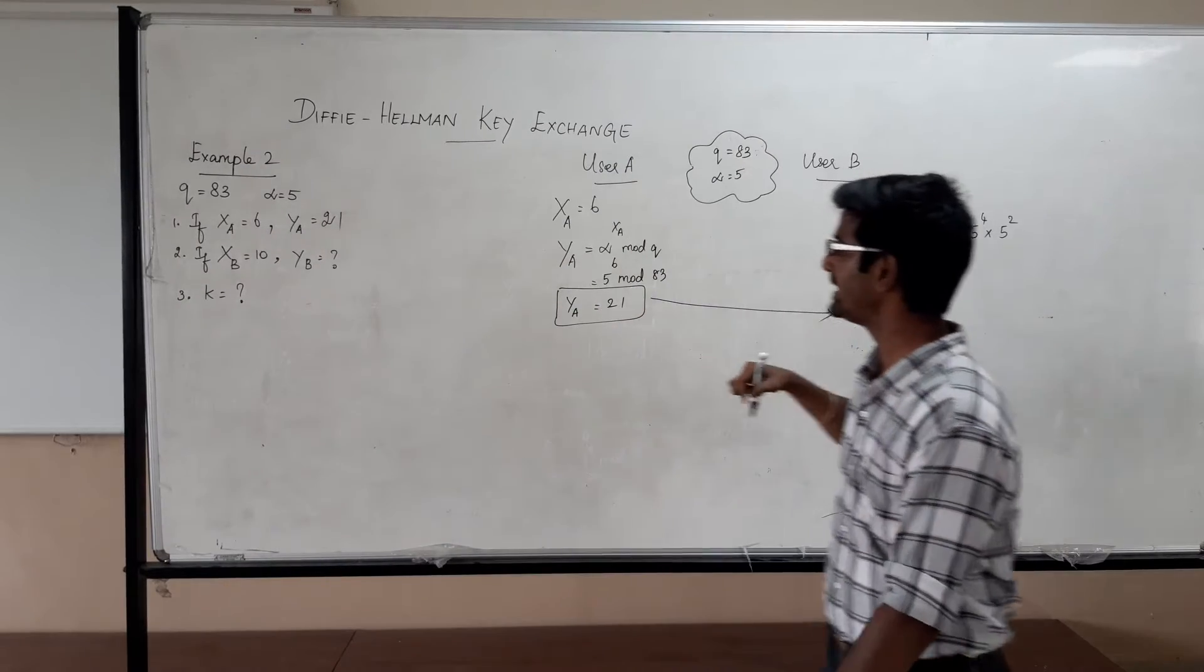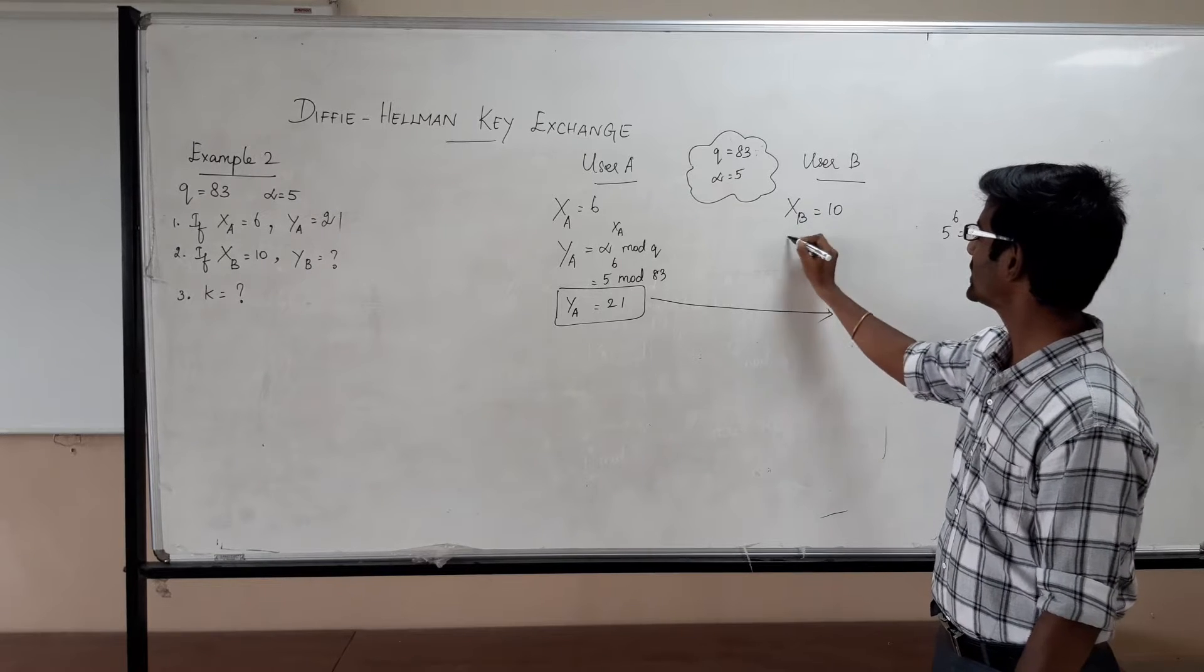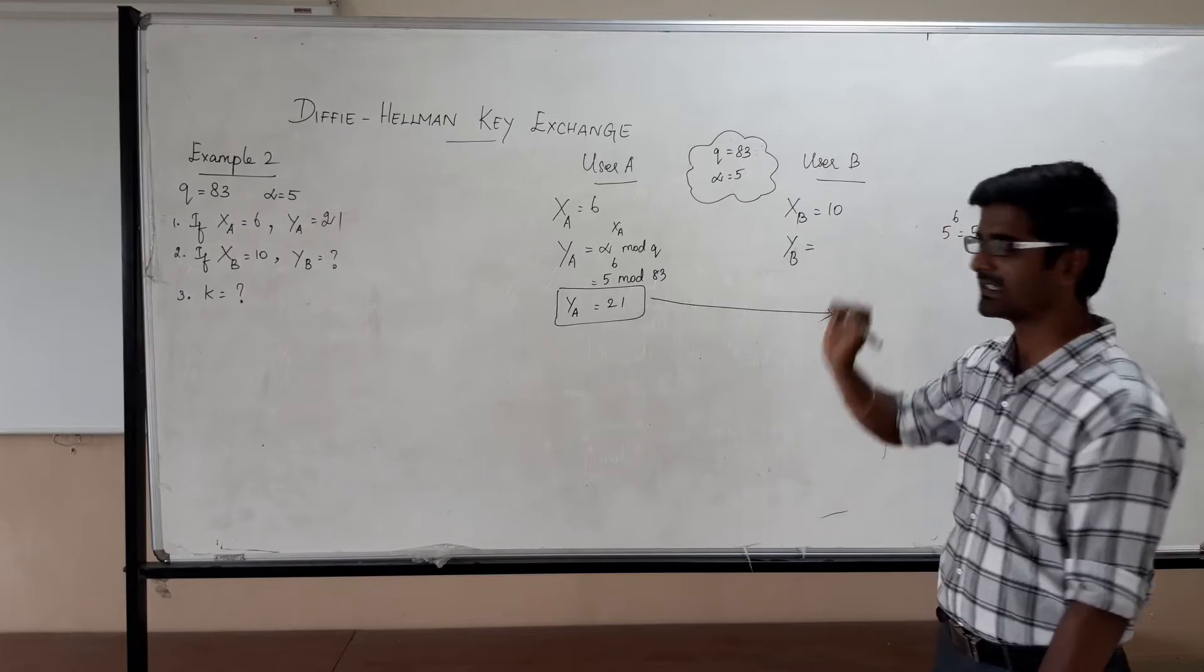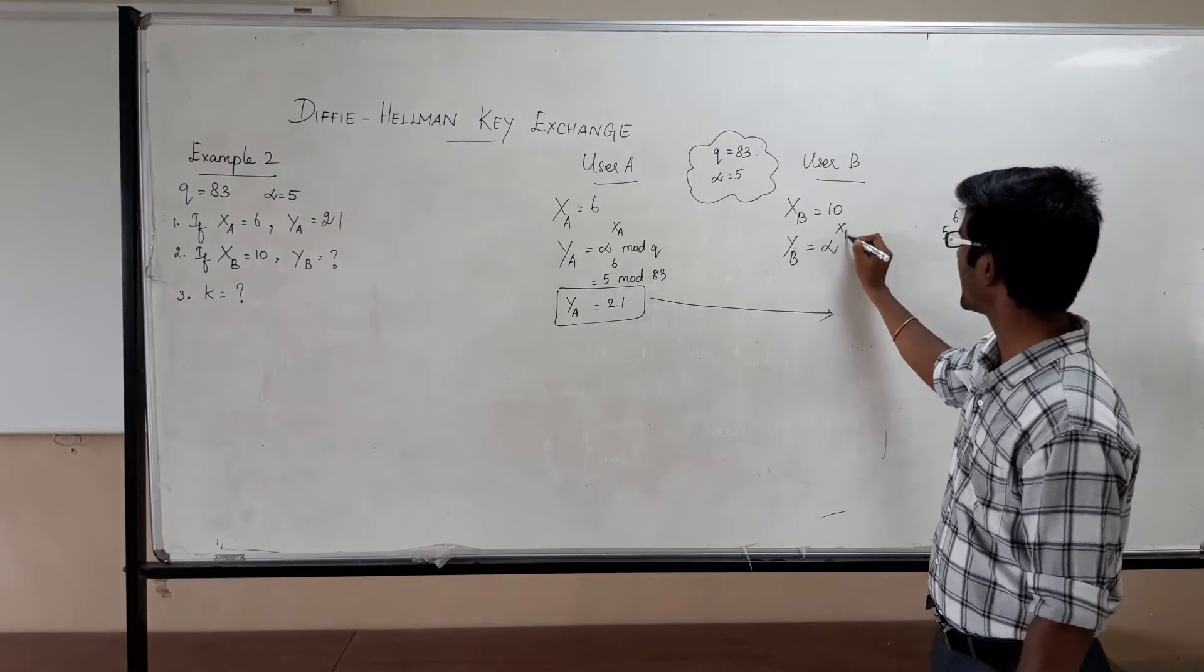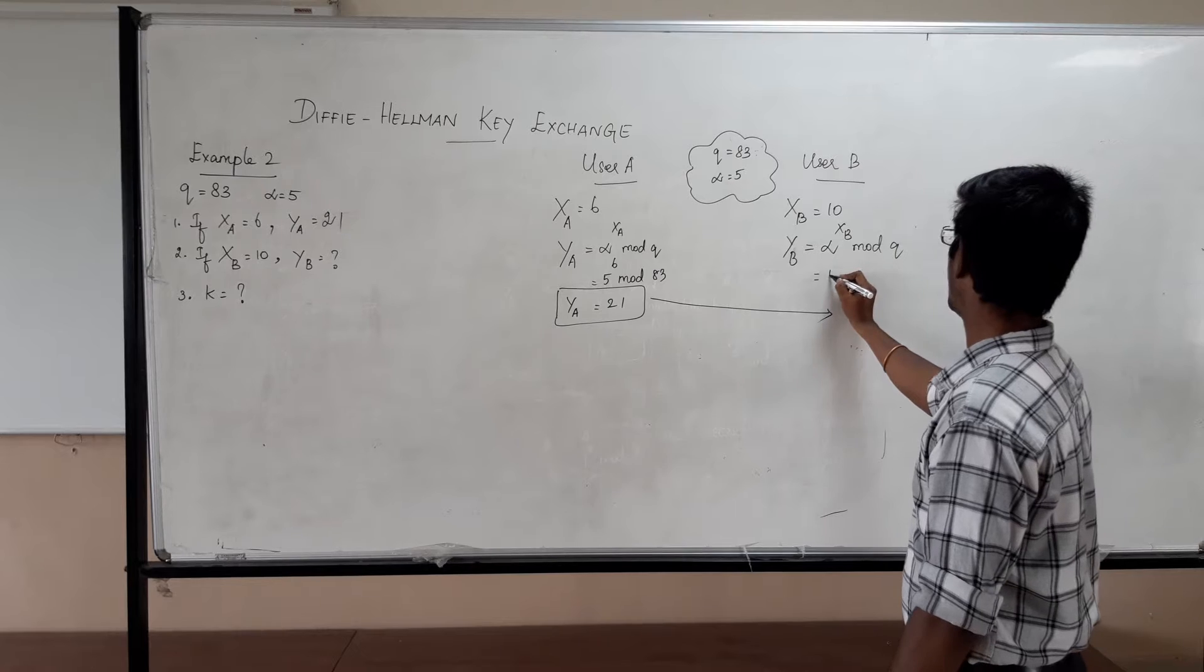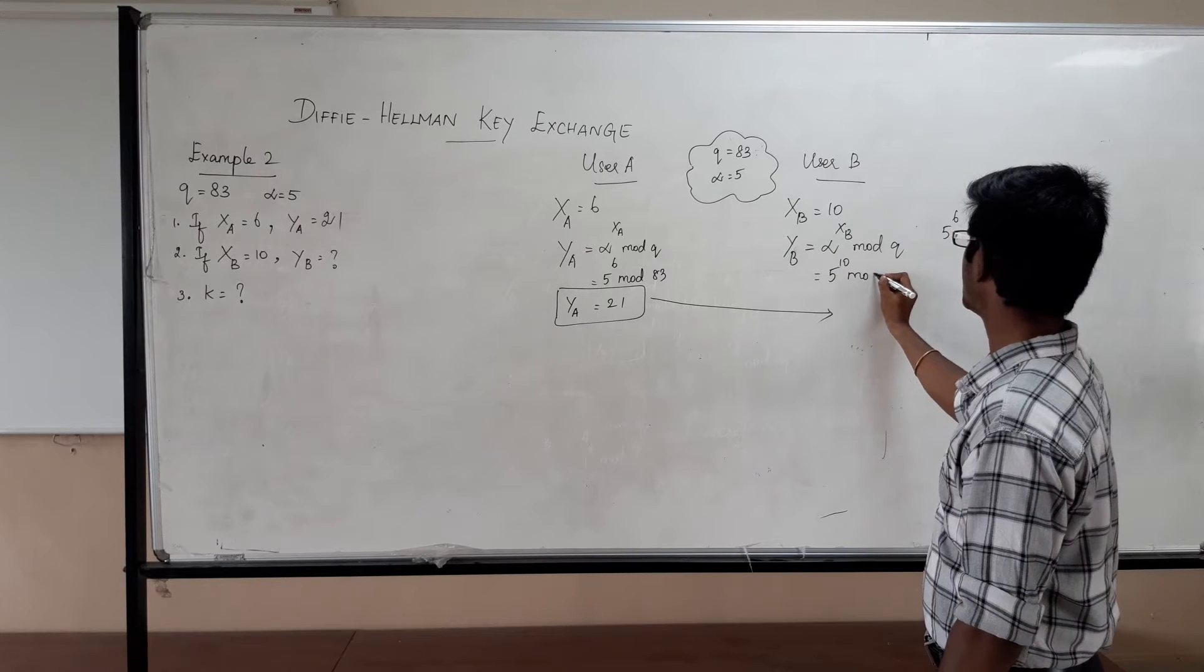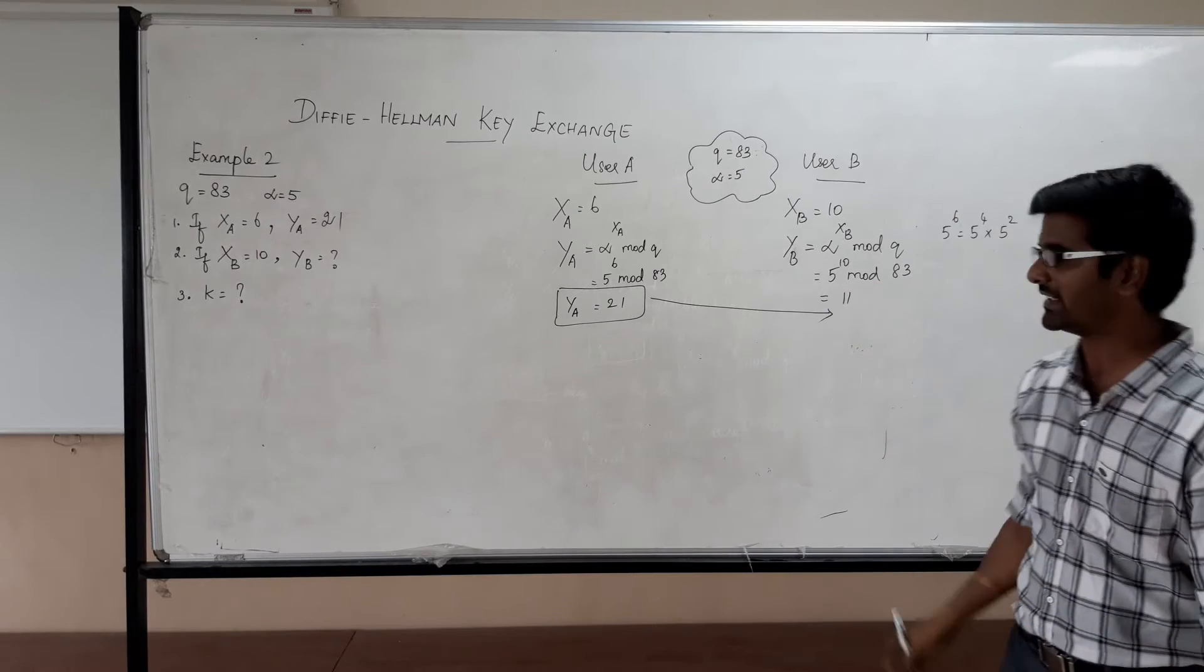Now if user B is having the private key as 10, what is his public key? His public key is alpha to the power of his private key mod Q, which is equal to, what is the value of alpha? 5. 5 to the power, XB is 10. 5 to the power 10 mod 83. If we calculate we get YB is equal to 11.